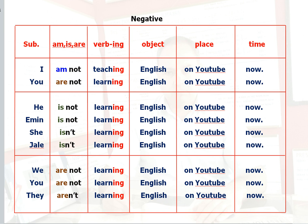Now let's look at how we make the negative sentence structure in present continuous tense. We will put 'not' to the right of the helping verbs am, is, are, as you see in the picture. We put 'not' to the right of 'am', to the right of 'is', and to the right of 'are' in the sentences.